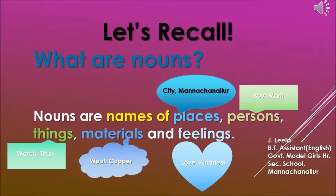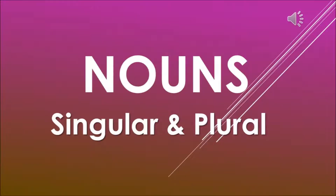Hello students. In our last class we studied about nouns. Let us recall what nouns are. Nouns are names of places like city and Manachanalur, persons like boy and money, things like watch, materials like wool and cotton, or feelings like love and kindness. We also studied about nouns in groups. So a noun refers to one thing and also many things. Our lesson today is about the idea of one and many — that is singular and plural.